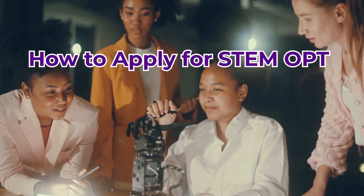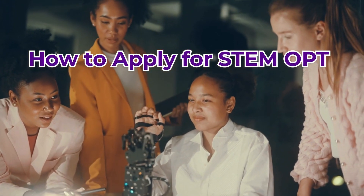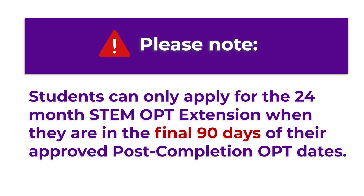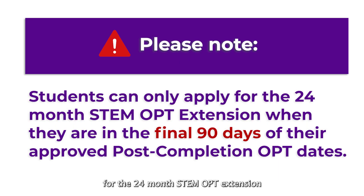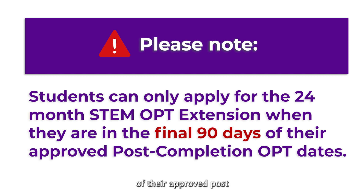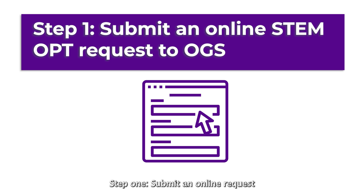How to apply for STEM OPT: Students can only apply for the 24-month STEM OPT extension when they are in the final 90 days of their approved post-completion OPT dates. Step 1: Submit an online request to OGS.